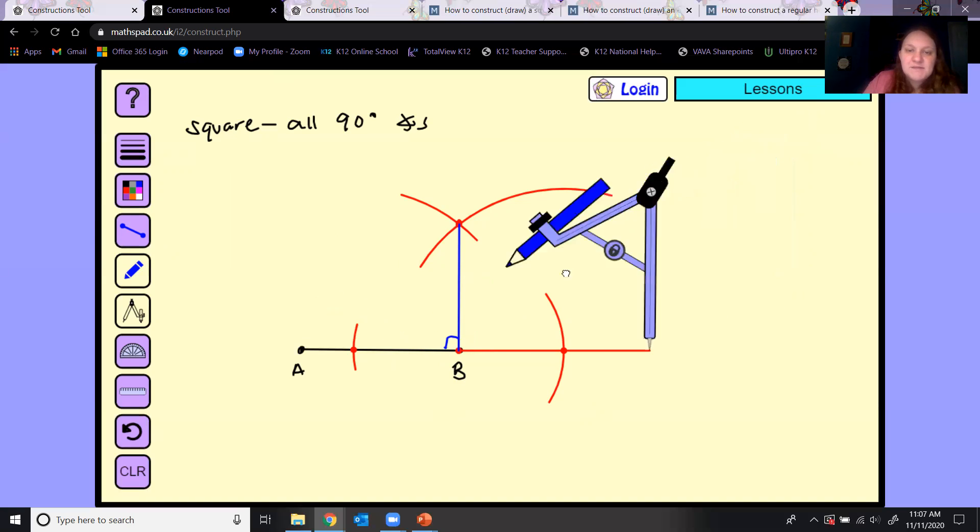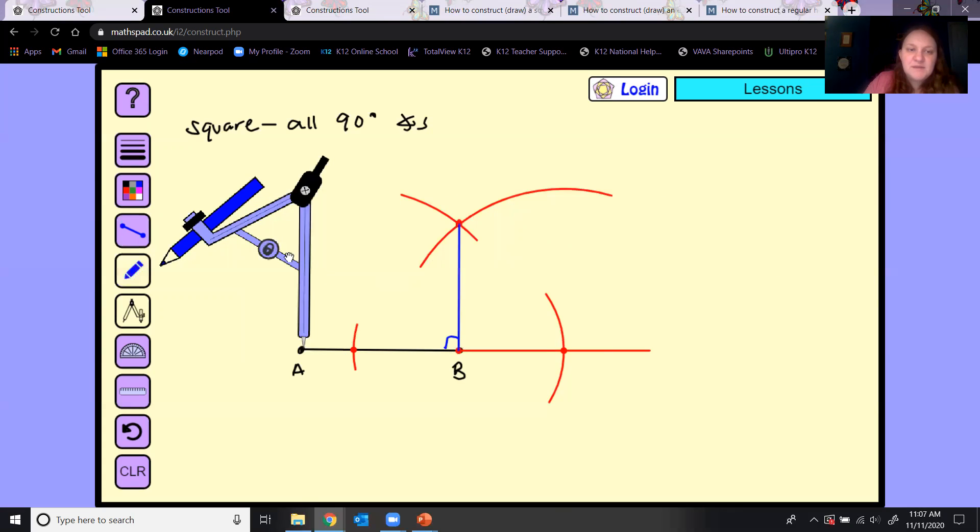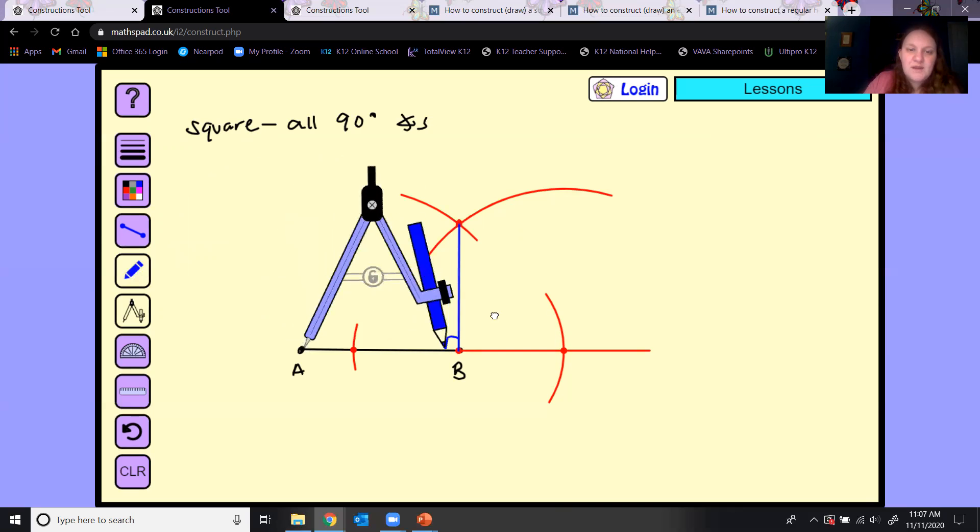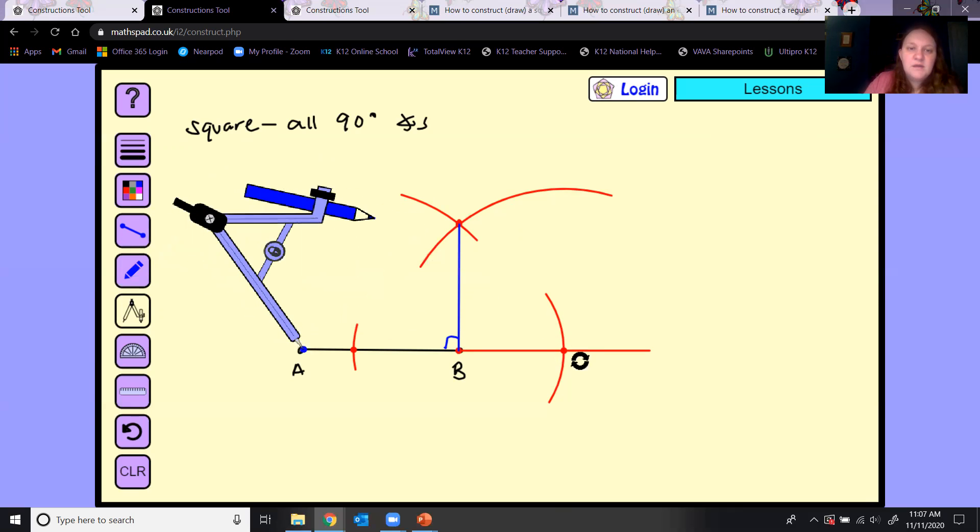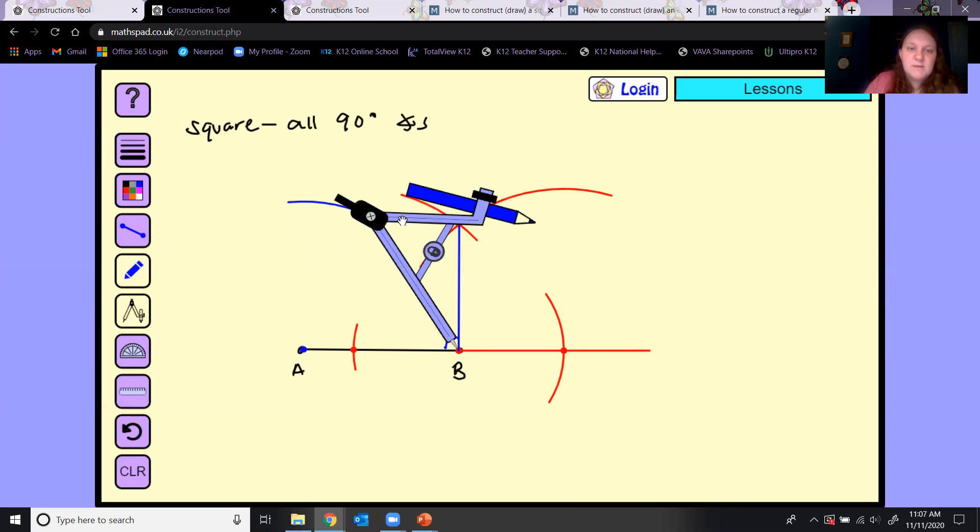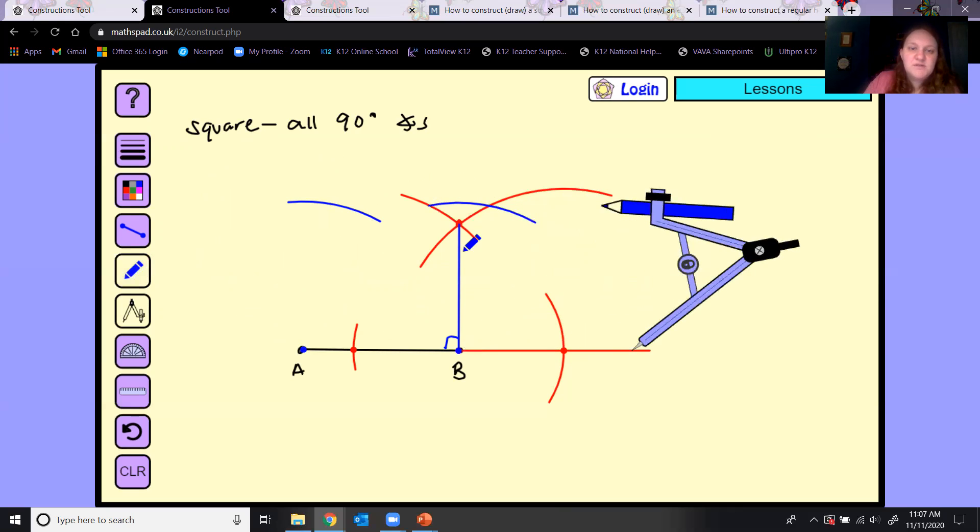I'm going to take my compass, open it up the length of AB. One point on A, pencil on B, lock it. Make an arc above and make the same size arc here above B. I want this blue arc up here to intersect the side, so I'll just take my straight edge and make that line a little bit longer so it does intersect.